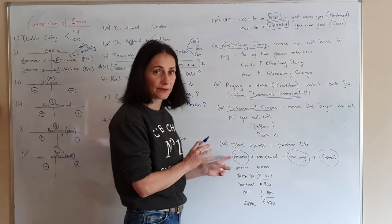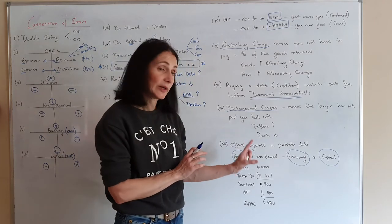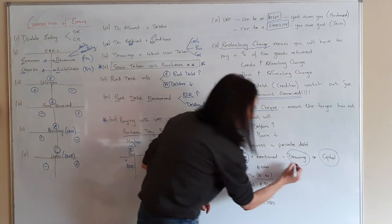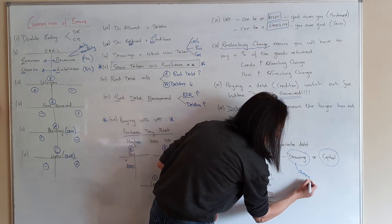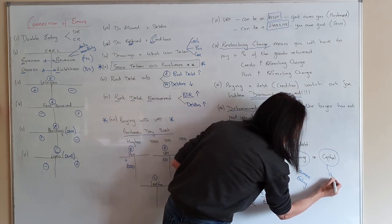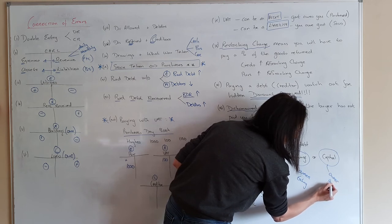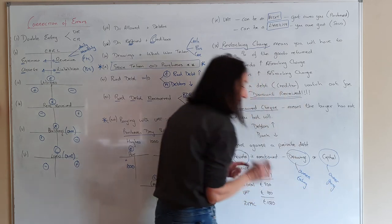Okay. And I'm going to show you that in a few examples in a few minutes. Drawings is the owner is taking. The owner is taking and capital the owner is giving to the business. Okay. So it's going to be one or the other.